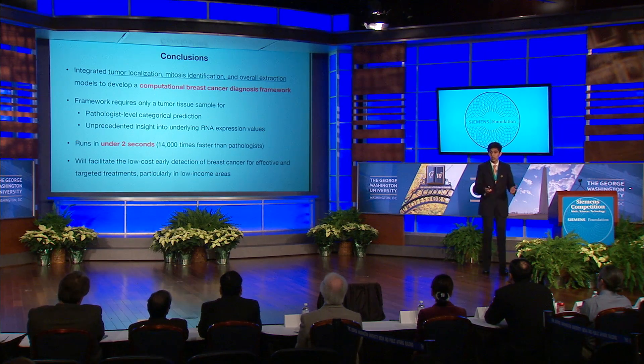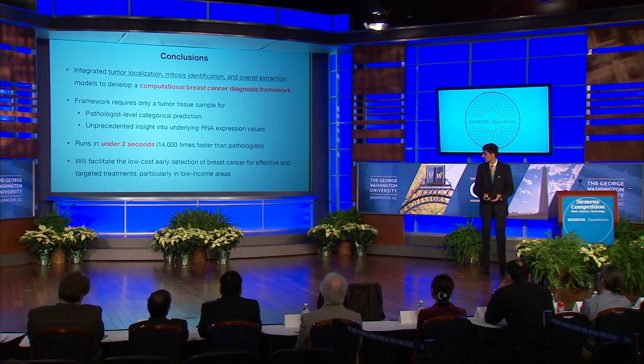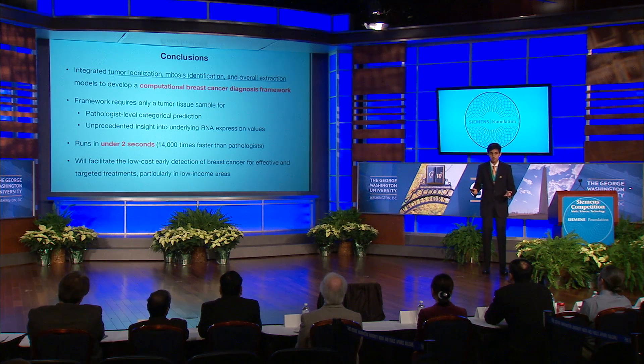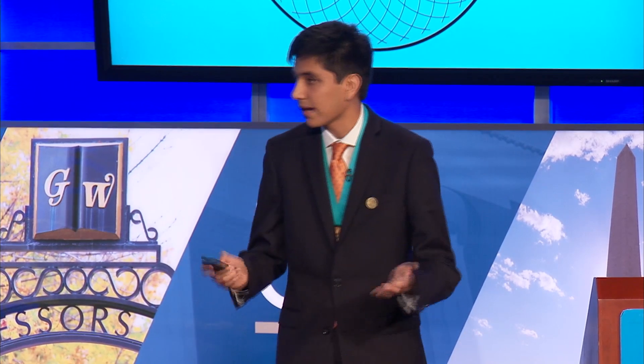In conclusion, I developed the first-ever computational comprehensive breast cancer severity prediction model combining multiple different biologically salient classifiers. My framework requires only a tumor tissue image to produce both categorical pathologist-level predictions and unprecedented insight into molecular expression regions. My model runs in under two seconds at a fraction of current costs, and will facilitate low-cost early detection of breast cancer for effective and targeted treatments. In terms of future work, I'd like to apply my model to other types of cancerous tumors, perform ex-vivo investigations of obtained features to reveal new biological pathways, and expand to clinical applications including initial screening and second opinions for pathologist graders. With additional biological and clinical verification, I have no doubt that my model will enable rapid classification and biomarker identification of other diseases and disorders.